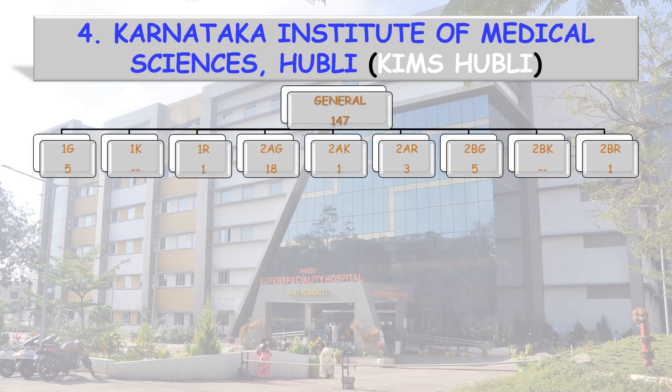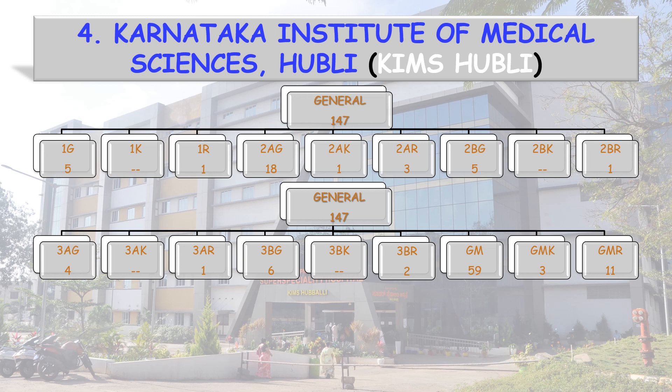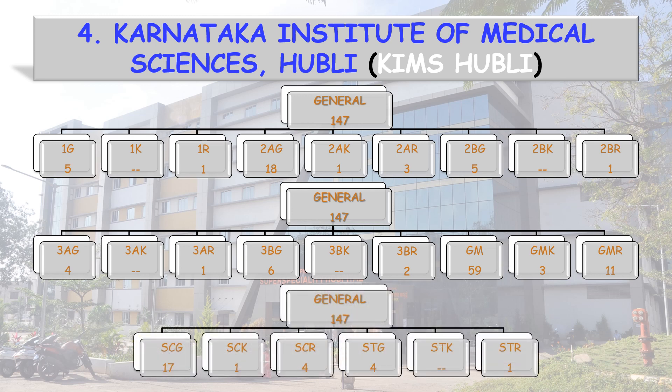General category 147 seats are further divided into: 1G 5 seats, 1K — none reserved, 1R 1, 2AG 18, 2AK 1, 2AR 3, 2BG 5, 2BR 1, 3AG 4, 3AR 1, 3BG 6, 3BR 2, General Merit (GM) 59, General Merit Kannada Medium Study (GMK) 3, General Merit Rural Study 11, SC General 17, SCK 1, SCR 4, STG 4, and STR 1.